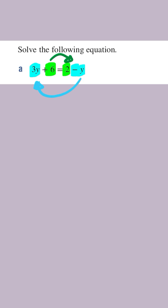When you move the terms to the other side, you always do the opposite operation. So we're going to have 3y. When we move the minus y to the left, this becomes plus y. On the right, we've got the 2, and when we move the plus 6 to the right-hand side, this becomes minus 6.